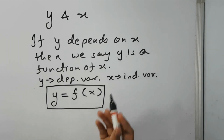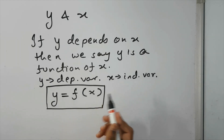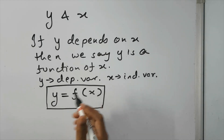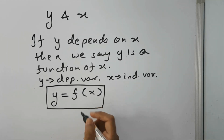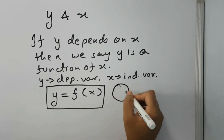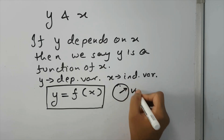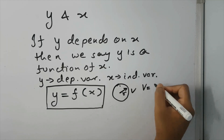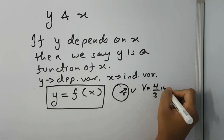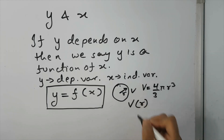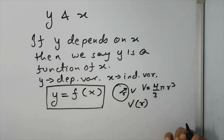Y depends on X. How do I represent this mathematically? I will write Y equals f of X. This is the general representation of a function. X is the independent variable and Y is the dependent variable. For example, the volume of a sphere depends on its radius. So that volume will be 4/3 π R³. You could write it as V is a function of R.